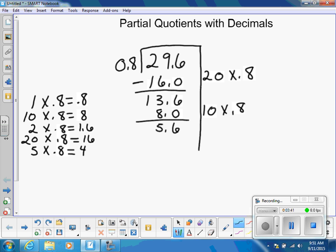We refer back to our list and I see that 5 groups of 8 tenths is 4. So that's the one we're going to use next. 5 groups of 8 tenths, I know that it's 4. And subtract that, I'm left with 1 and 6 tenths. And I see that on our list 2 groups of 8 tenths is 1 and 6 tenths.